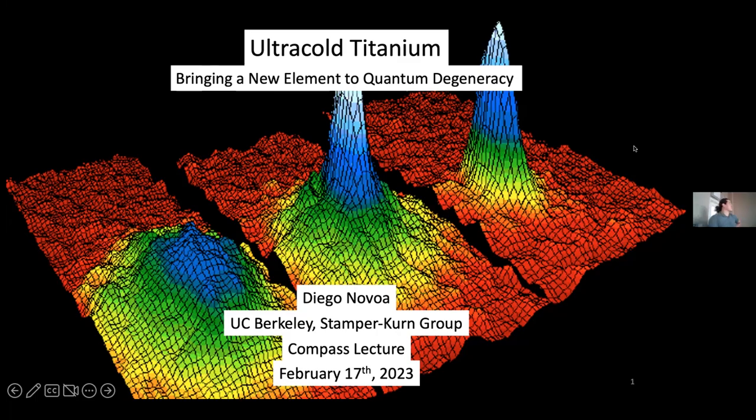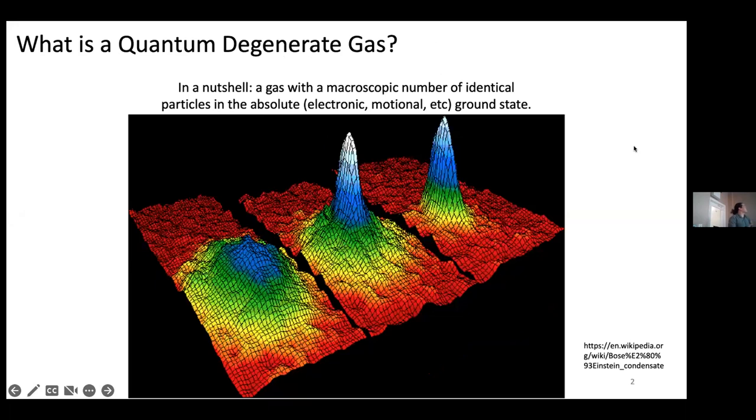So first off, that's a lot of fancy words. What is quantum degeneracy? What's a quantum degenerate gas? In a nutshell, this is a gas with a macroscopic number of identical particles in the absolute ground state. So for atoms, this would be electronic and motional. For molecules, it would be vibrational, rotational, electronic, motional, et cetera.